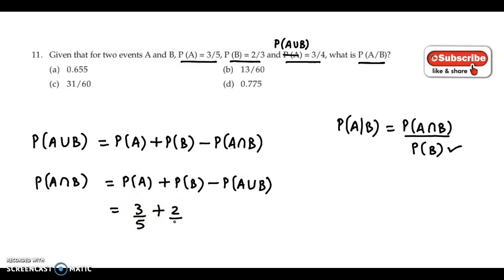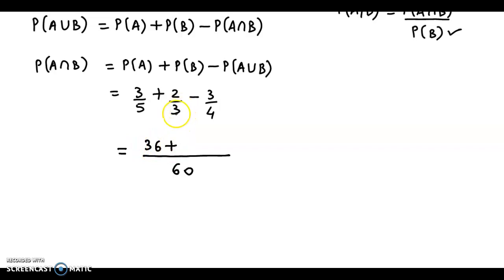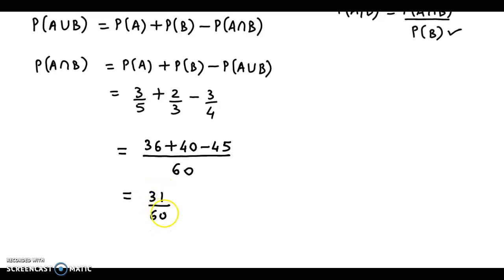P of A is 3/5, B ki probability hai 2/3, aur union hai 3/4. Toh agar hum denominators equalize karte hain, 5, 3 aur 4 ka LCM lete hain, we get it as 60. Now, 5 into 12 is 60, so 3 into 12 aayega 36; 3 into 20 is 60, so 2 into 20 is 40; 4 into 15 is 60, so 3 into 15 aayega 45. Toh simplify karte hain: 36 plus 40 minus 45, toh intersection ki probability aati hai 31 upon 60.